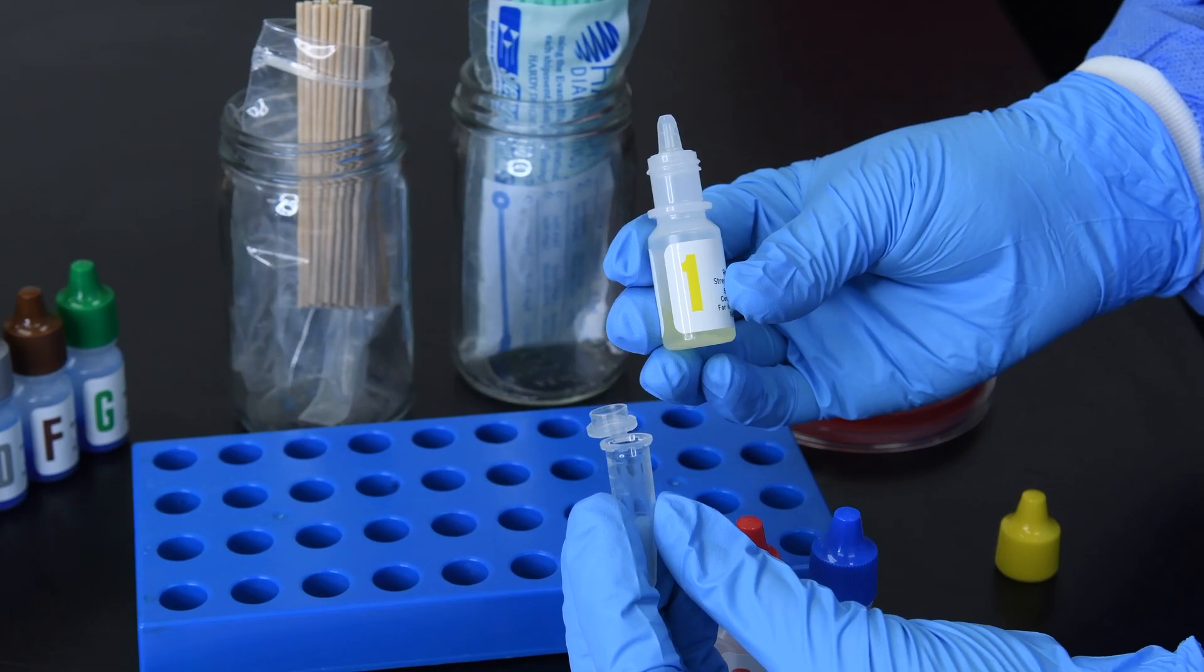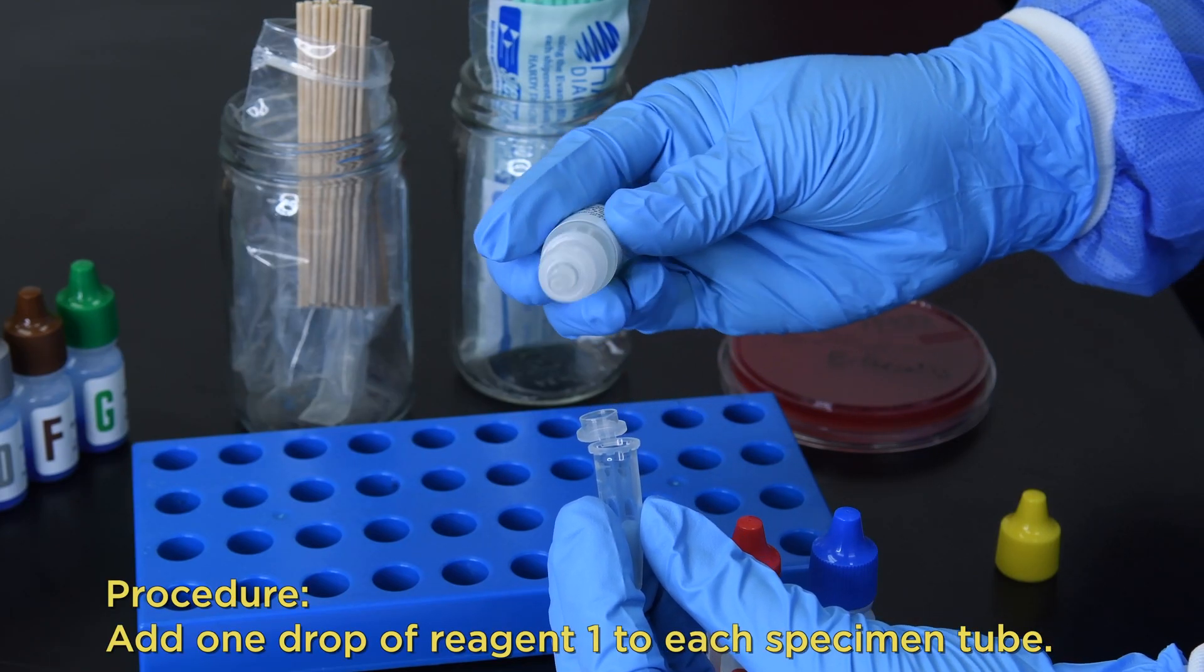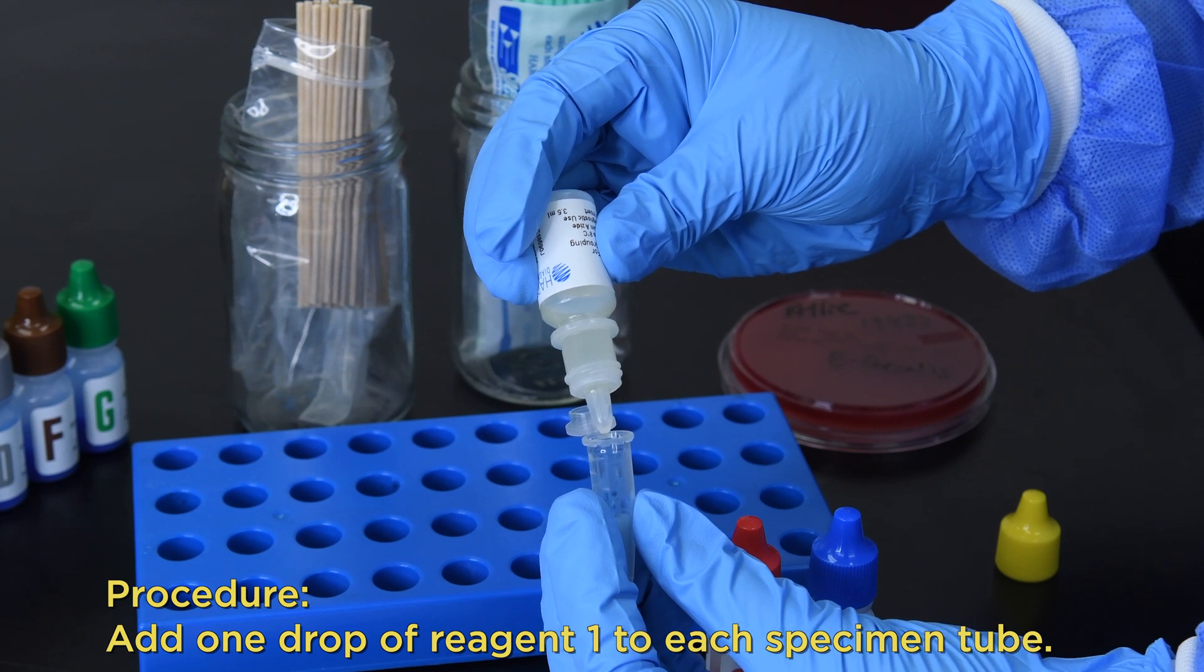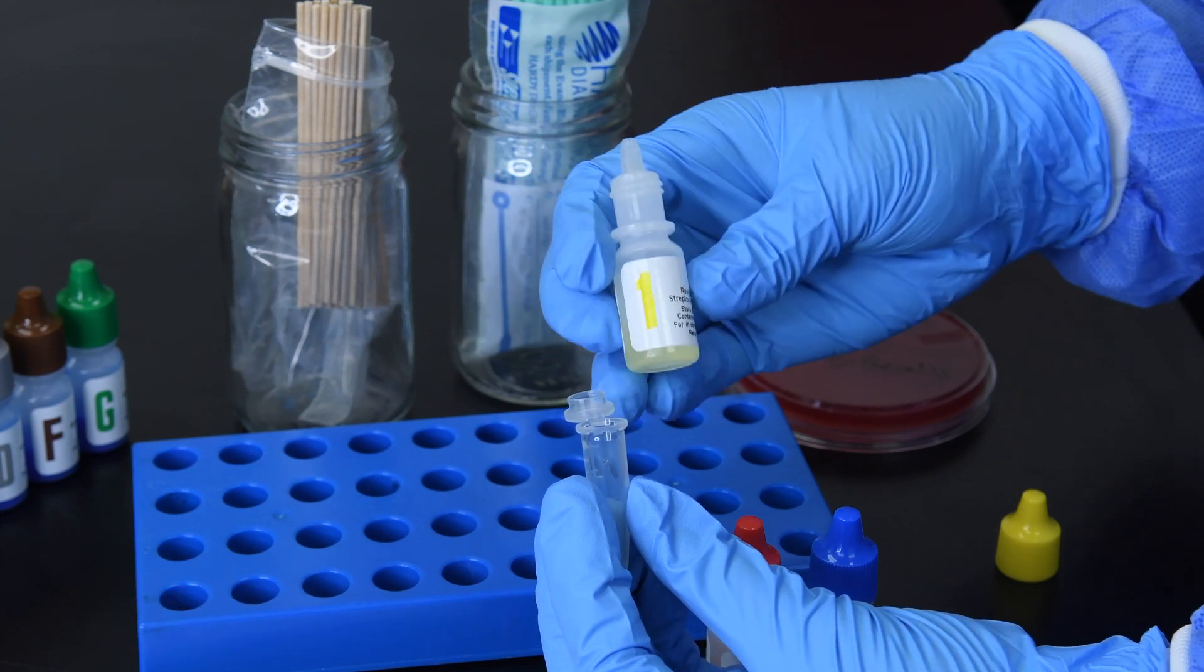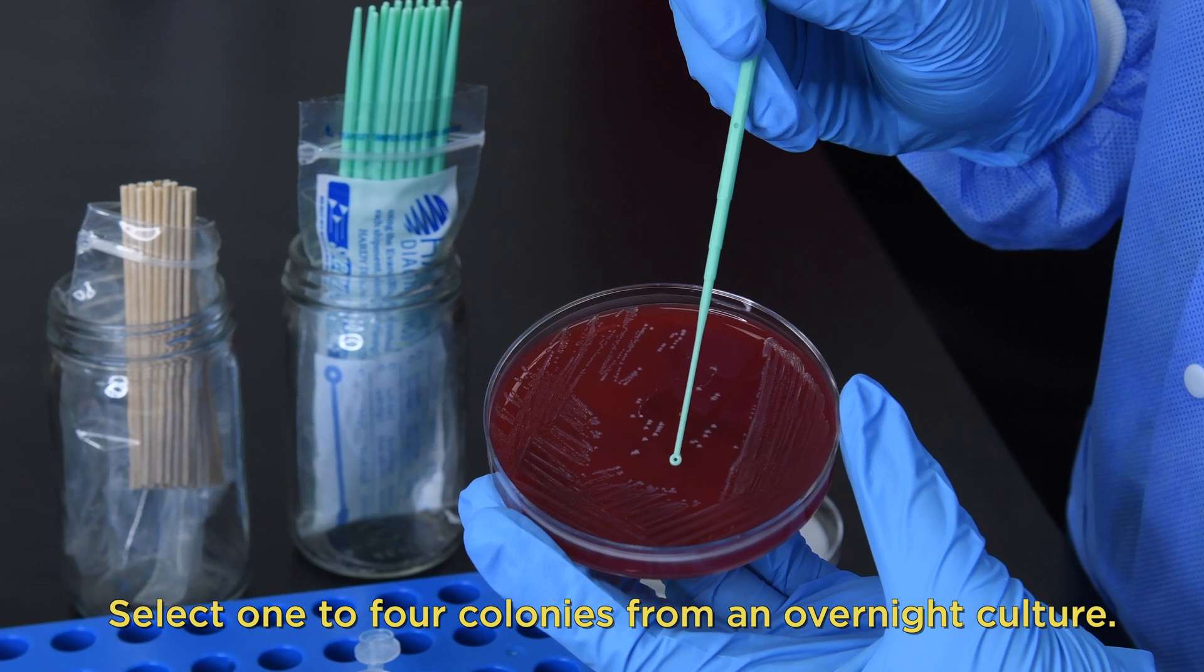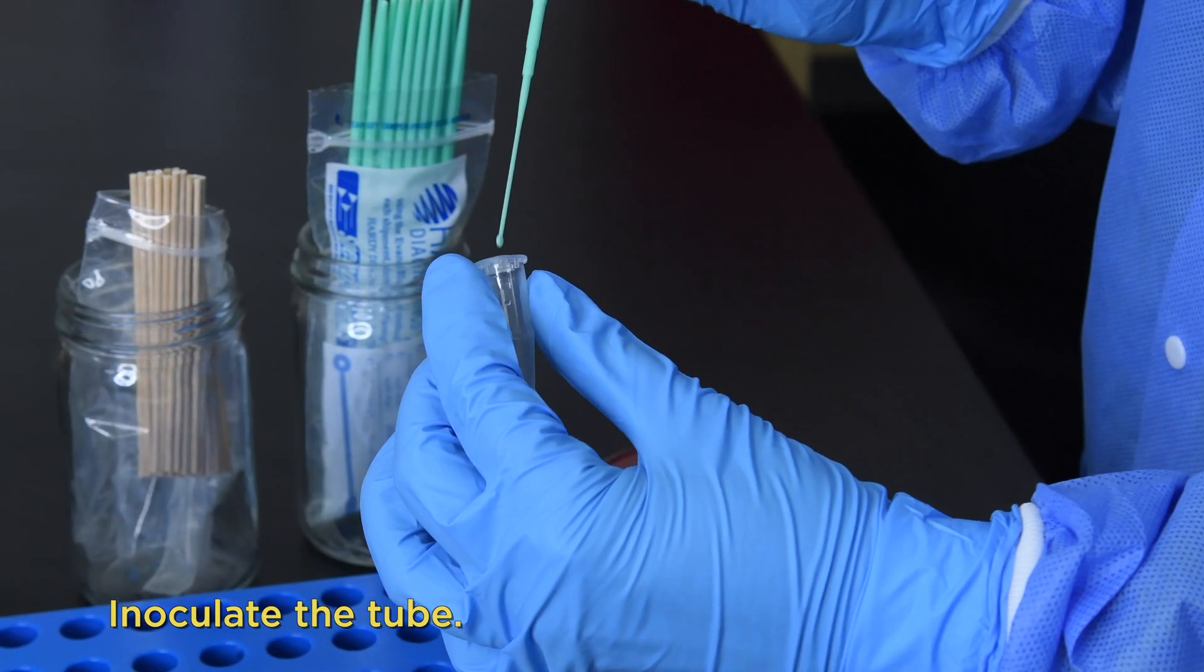The simple procedure is as follows. Add one drop of reagent 1 to each specimen tube. Select one to four colonies from an overnight culture. Inoculate the tube.